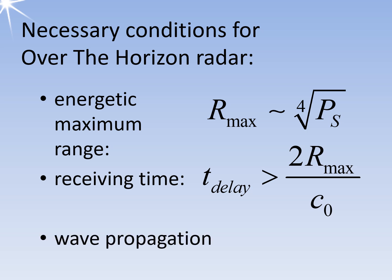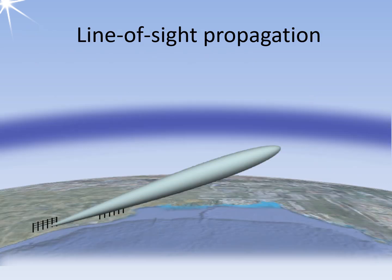Third, wave propagation: the electromagnetic waves must be able to overcome the curvature of the earth by diffraction or reflection. However, anomalous wave propagation can also fulfill this condition. Line of sight propagation, abbreviated to LOS, is a characteristic of electromagnetic wave propagation meaning waves can only travel in a direct visual path from the source to the receiver without obstacles.